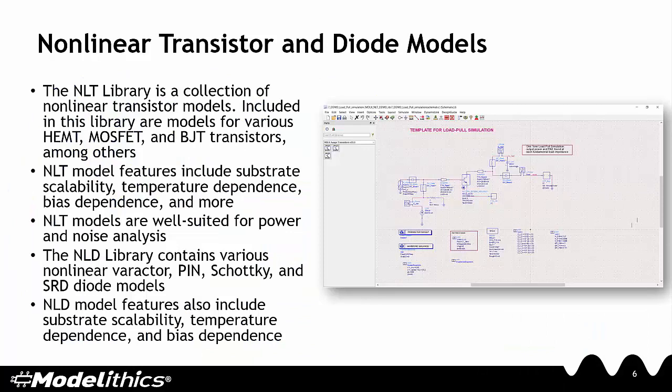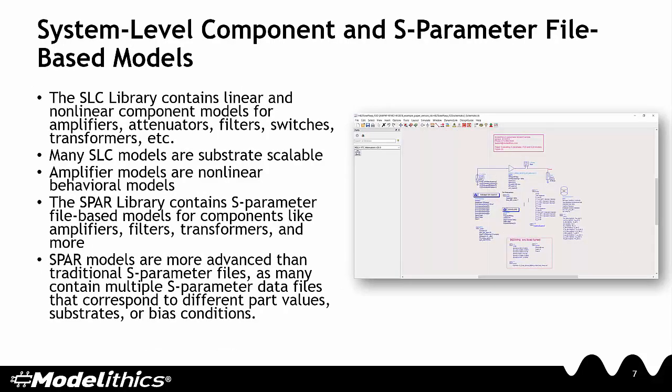The Complete Library provides more than just passive component models — it also contains nonlinear transistor and nonlinear diode models. Models are available for various HEMT, MOSFET, and BJT transistors, as well as pin, Schottky, varactor, and step recovery diodes. The SLC library contains linear and nonlinear models for system-level components like amplifiers, attenuators, filters, switches, and transformers. Many of these models are substrate scalable, and the amplifier models are nonlinear behavioral models allowing for much more than just S-parameter simulations.